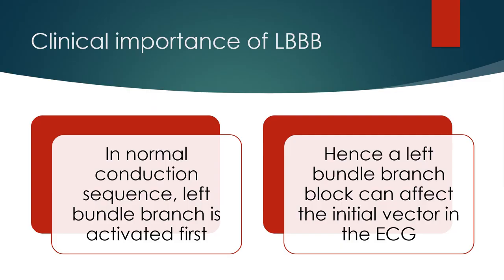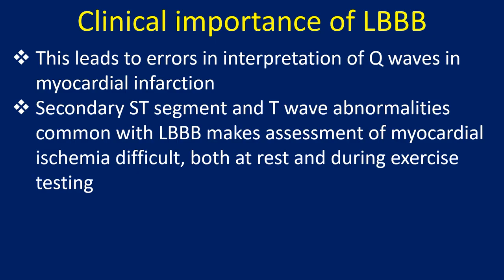In the normal conduction sequence, the left bundle branch is activated first. Hence, a left bundle branch block can affect the initial vector in the ECG, leading to errors in interpretation of Q waves in myocardial infarction.